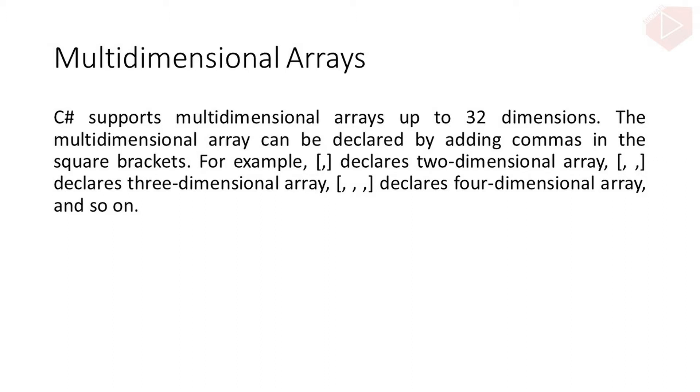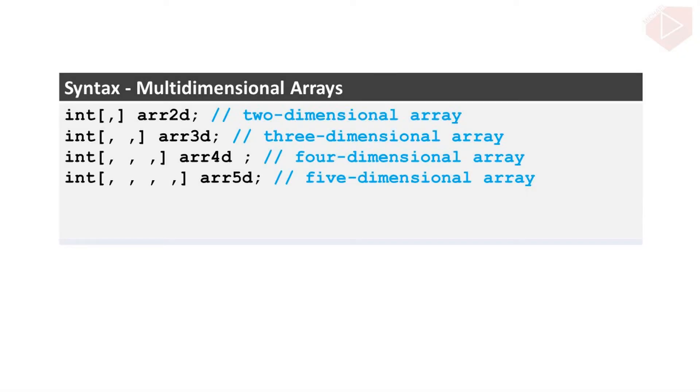For example, if you put a comma inside the square brackets, this declares a two-dimensional array. And if you put two commas, this declares a three-dimensional array, and so on. These are the samples of how we declare a two-dimensional array, three-dimensional array, four-dimensional array, and five-dimensional array.